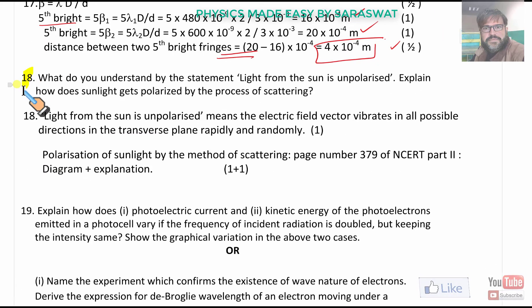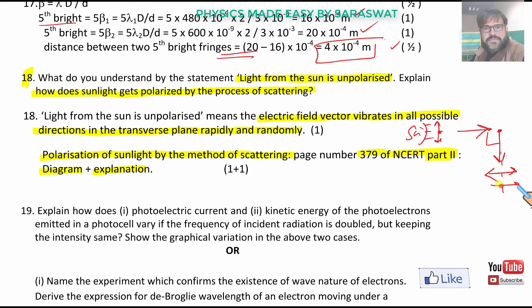What do you understand by the statement light from the sun is unpolarized? Light from the sun is unpolarized means electric vector vibrates in all possible directions of the transverse wave plane rapidly and randomly. How does sunlight gets polarized by the process of scattering? Polarization of scattering by the method of scattering is page number 379 of NCERT part 2 diagram plus explanation. This is the light from the sun, unpolarized light. This is the polarizer and the scatterer in the atmosphere.